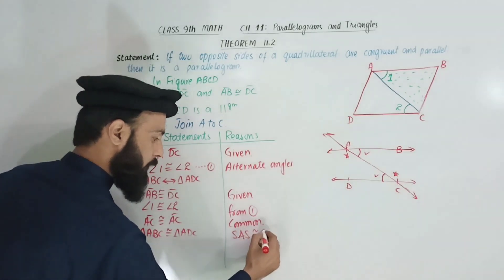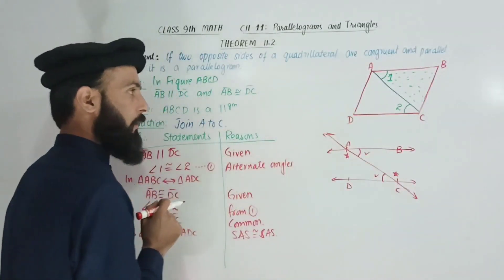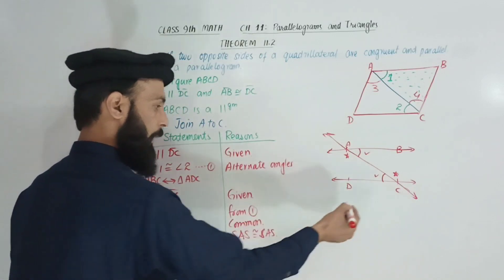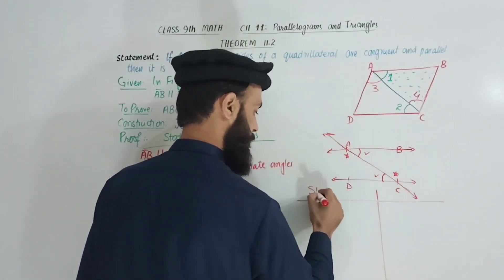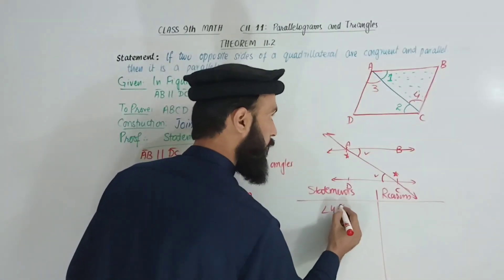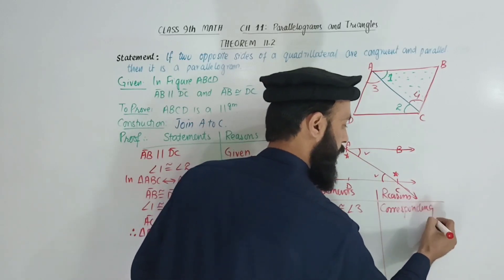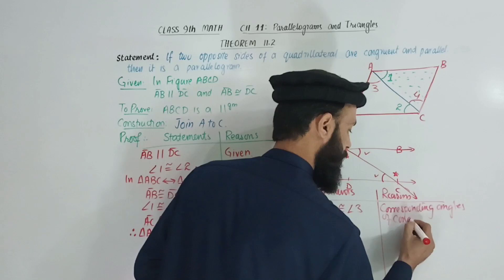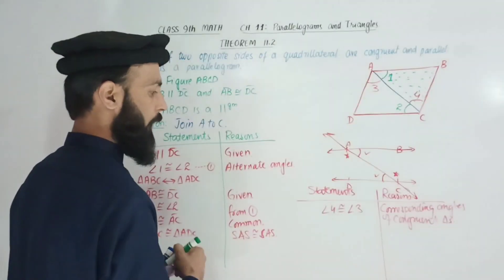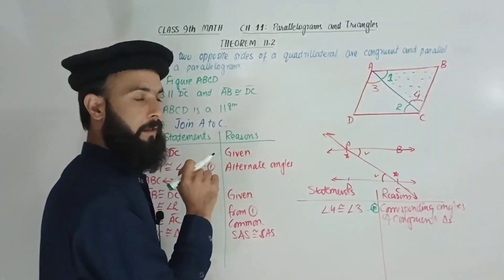Side, angle, side — congruent to side, angle, side. By the SAS postulate, the two triangles are congruent. Therefore, their corresponding angles are congruent. Let angle 3 and angle 4 be the corresponding angles. Angle 4 is congruent to angle 3 — these are corresponding angles of congruent triangles. Since angle 4 equals angle 3, these are alternate angles, which means AD is parallel to BC.